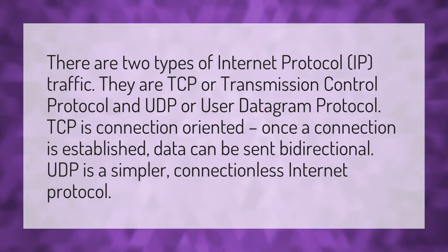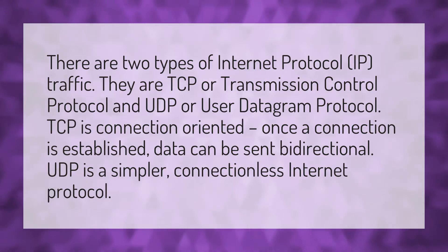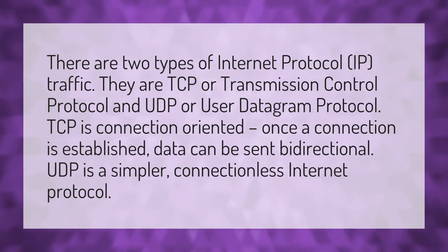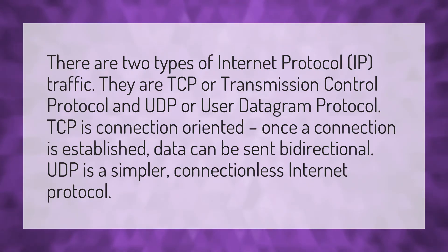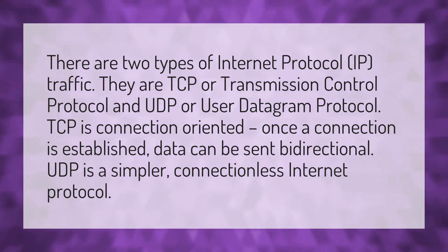There are two types of internet protocol IP traffic. They are TCP or Transmission Control Protocol and UDP or User Datagram Protocol. TCP is connection-oriented. Once a connection is established, data can be sent bidirectional. UDP is a simpler, connectionless internet protocol.